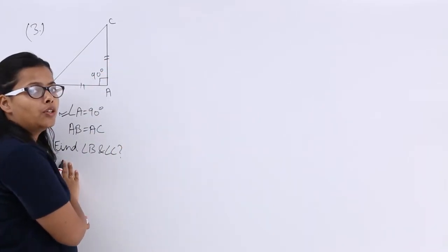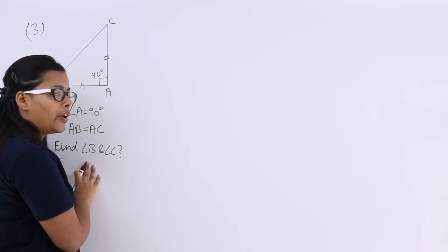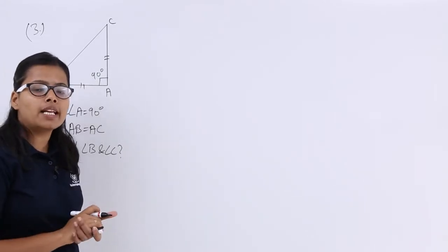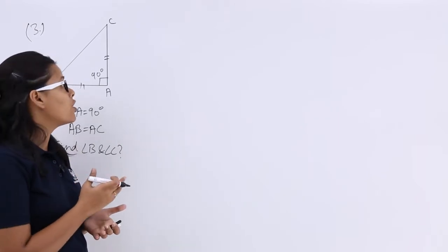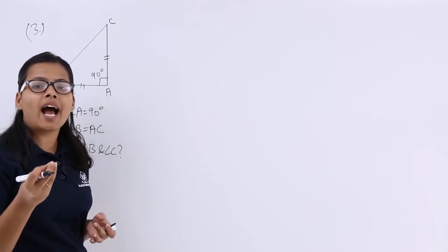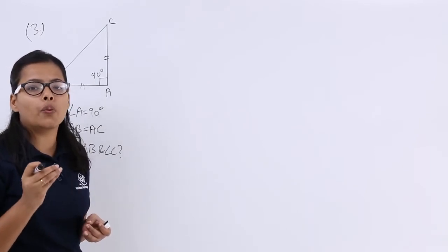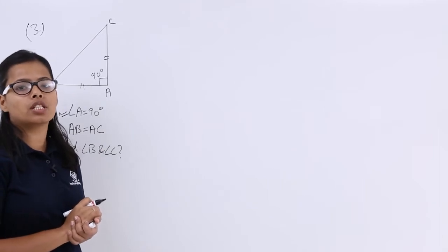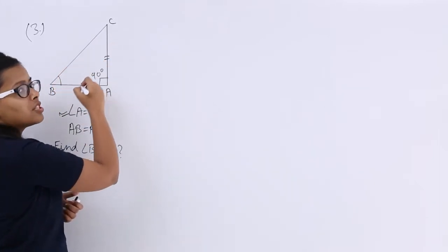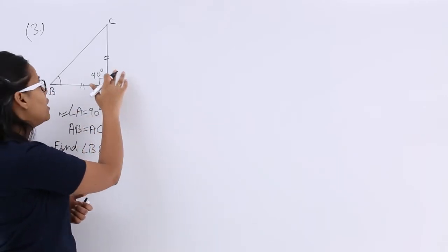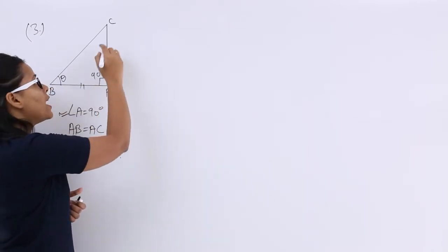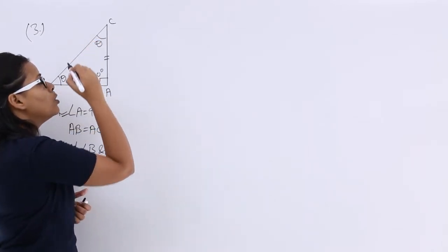What you need to find out here are the values for angle B and angle C. Now, as per the properties I have already discussed for a triangle, angles opposite to equal sides of an isosceles triangle are always equal. So if these two sides of this triangle are equal, the angles opposite to those equal sides will also be equal.